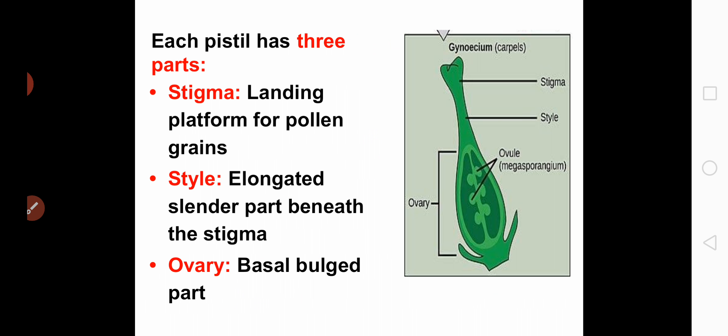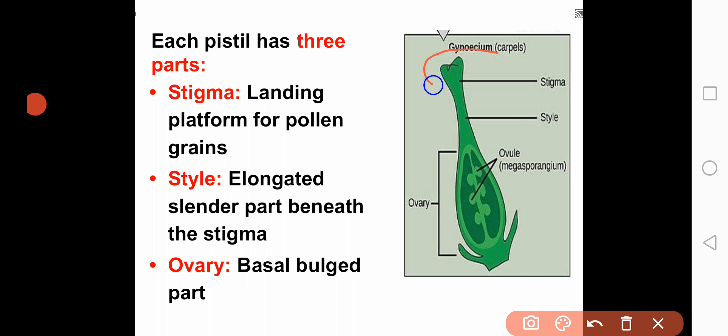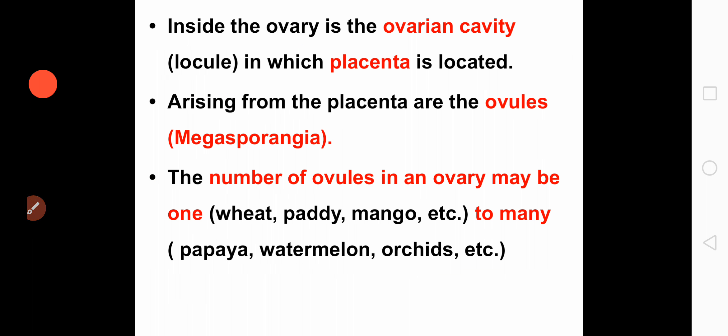Each pistil contains three parts: stigma, style, and ovary. The stigma is the landing platform for the pollen grains — it is the tip portion of the pistil which receives the pollen grains. Next to the stigma there is a long stalk-like portion called the style.